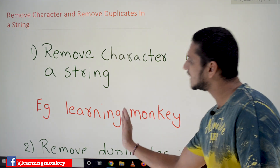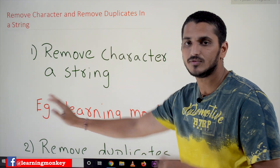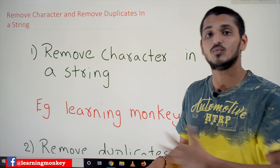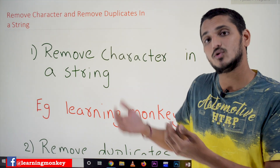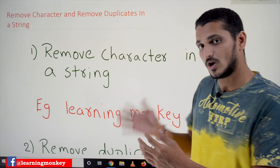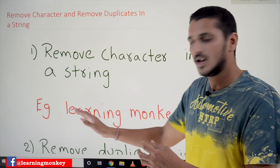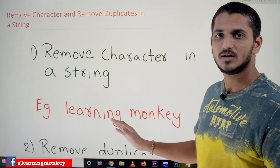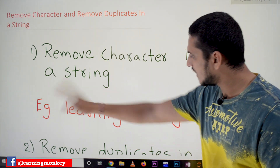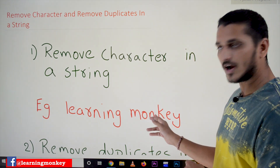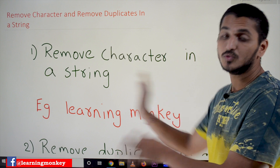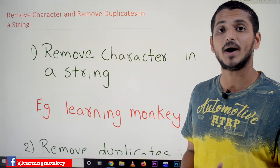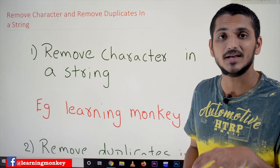Whenever we find 'n', to remove it we have to shift all the remaining characters one step to the left. We have to write a loop and move the characters to the left every time we find 'n'. That is what we have to do in other languages.